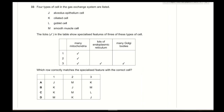Question 33: Four types of cells in the gas exchange system are listed. Cell 3 has many mitochondria, lots of endoplasmic reticulum, and many Golgi bodies — clearly indicating active protein synthesis and secretion. This is a goblet cell, which actively secretes mucus. Since we cannot distinguish between cells 1 and 2 from the features given, the only correct and logical answer is C.